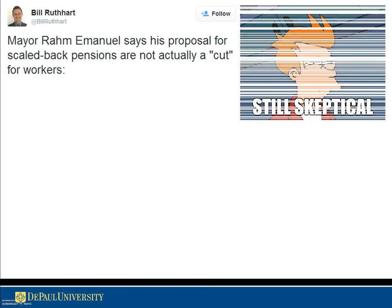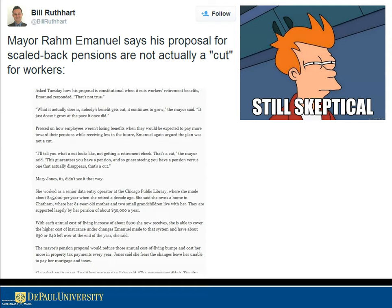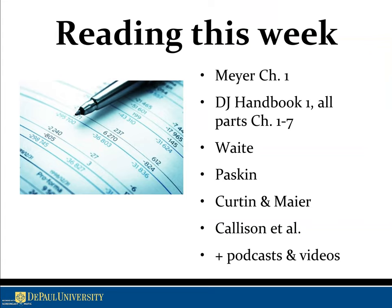Similarly, a good example comes from a budget story by Chicago Tribune reporter Bill Ruthart, who tweeted and then published a story about scaling back pensions when Rahm Emanuel was mayor. The dispute was over the semantics of the word 'cut' — whether lowering the rate of pension increase constitutes a cut. Bill didn't just do he-said-she-said. He showed his own math, demonstrated how it didn't match the mayor's logic, found someone it affected — Mary Jones, 61 — and showed through her salary and benefits exactly what it would cost her.